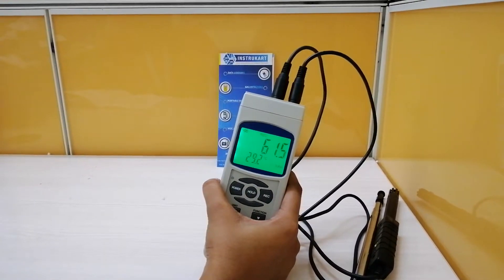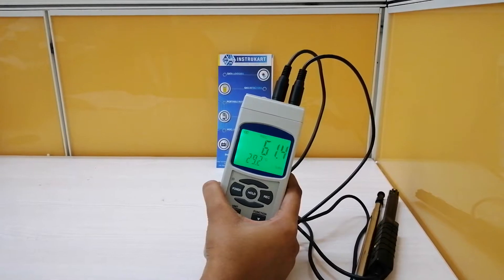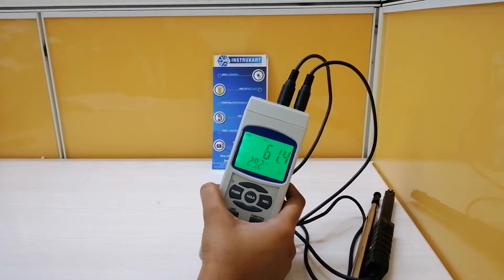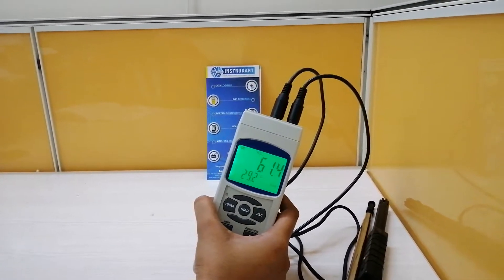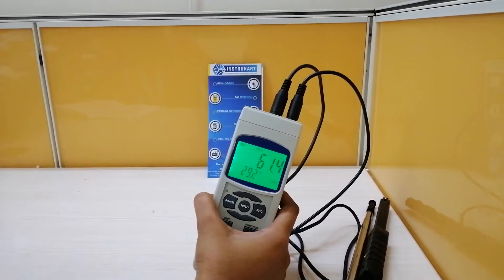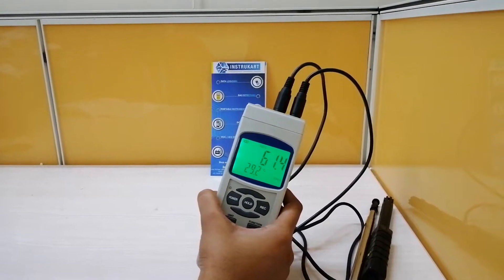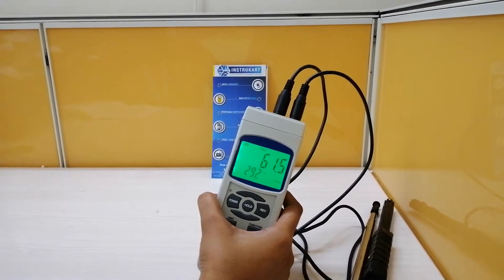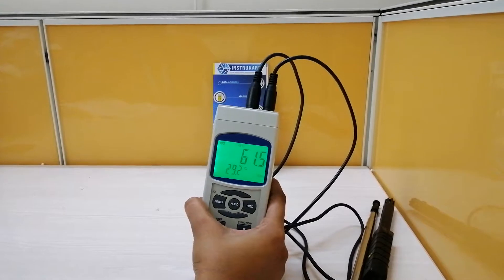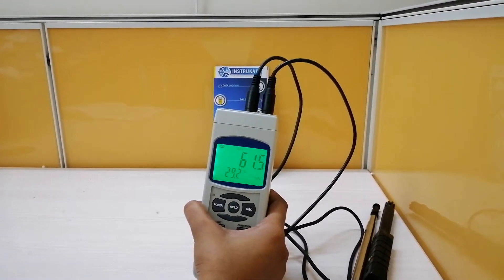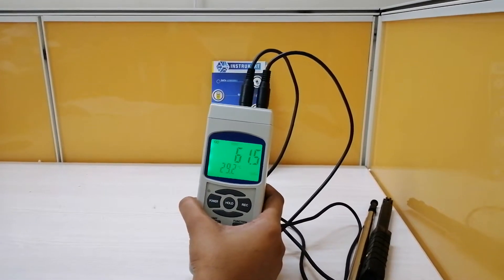As I told, it can also measure the humidity and temperature. Humidity range of 5 percent to 95 percent RH and temperature range of 0 to 50 degree Celsius. You can also measure the dew point and wet bulb temperature in both degree Celsius and degrees Fahrenheit, of range minus 25.3 to 48.9 degree Celsius for dew point and minus 21.6 to 50 degrees for wet bulb temperature.